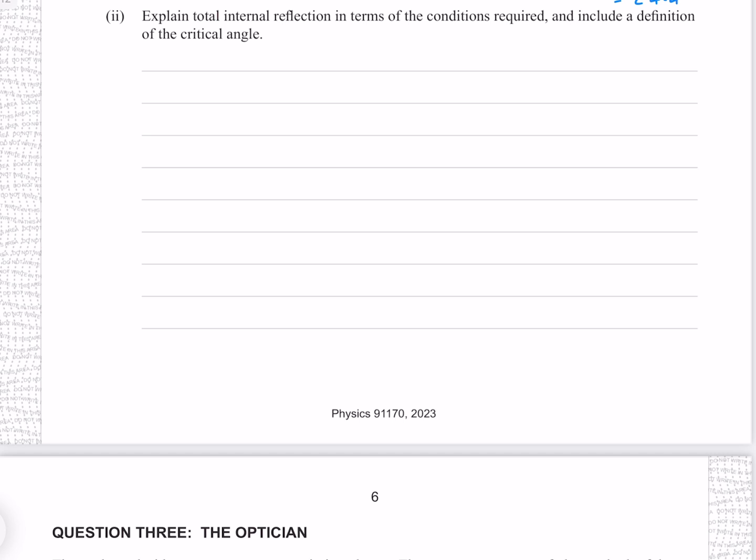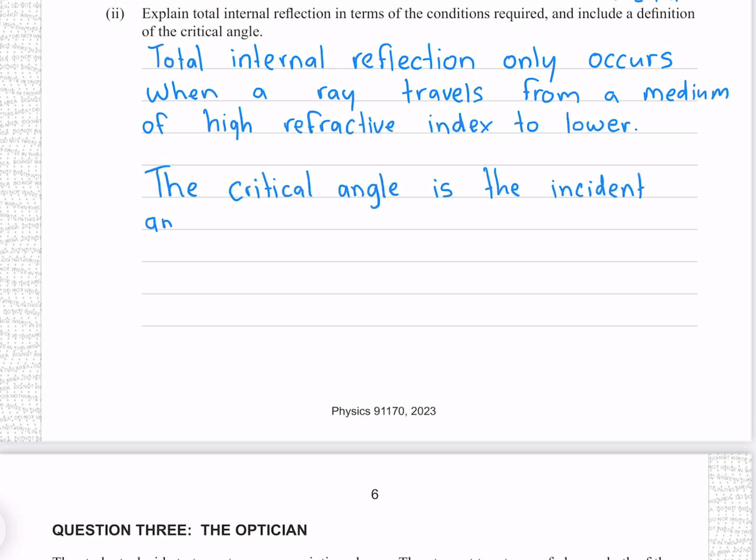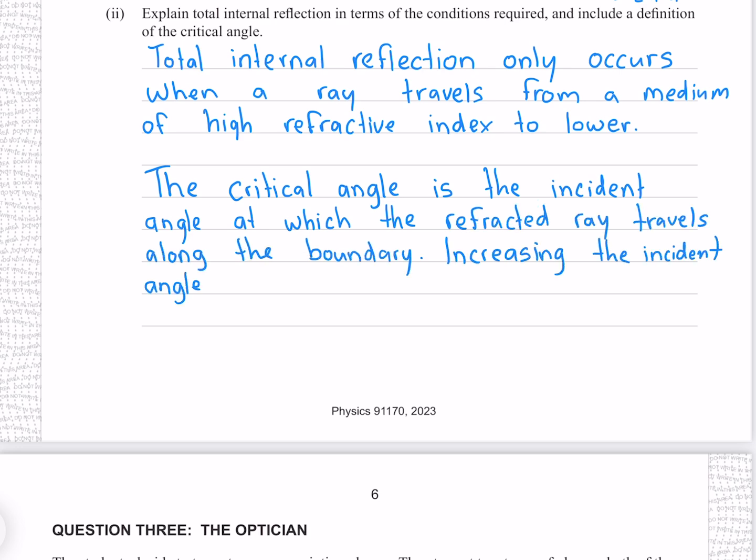Explain total internal reflection in terms of the conditions required and include a definition of the critical angle. Total internal reflection only occurs when a ray travels from a medium of high refractive index to lower. The critical angle is the incident angle at which the refracted ray travels along the boundary. Increasing the incident angle above this results in total internal reflection.